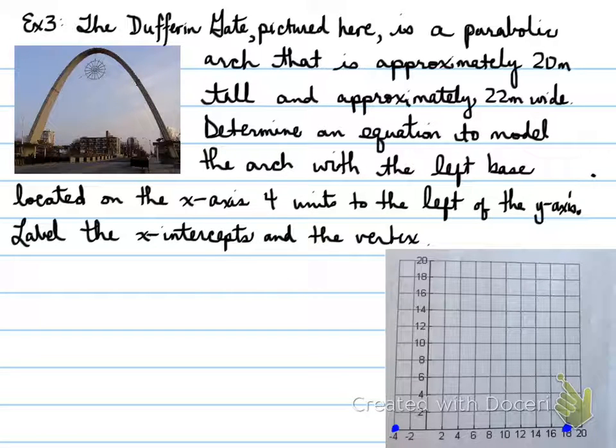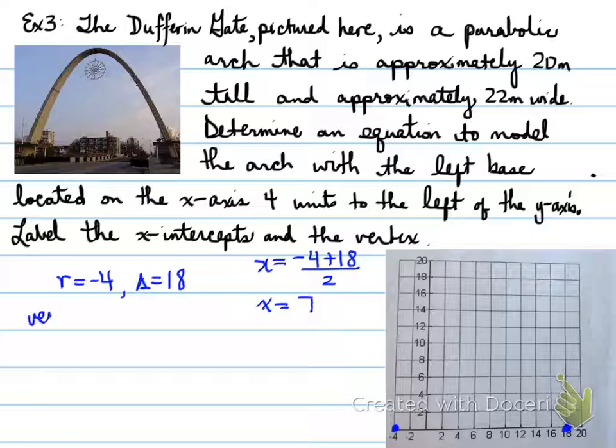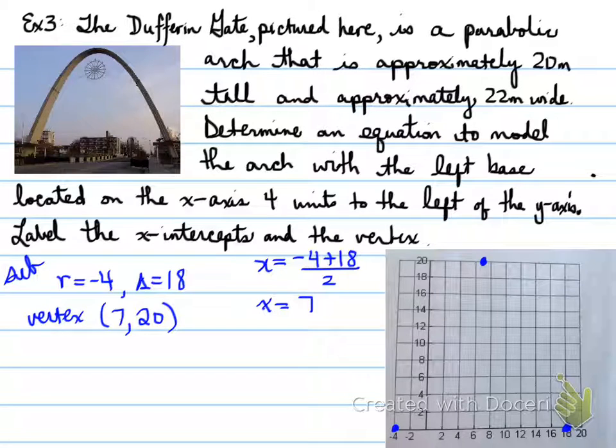Where would it reach the 20 meters high coming up this arch? We have our r, which is negative 4, and our s, which is 18, and we can find out where the axis of symmetry can be located. That will be at negative 4 plus 18, all divided by 2, which gives us x equals 7. This gives us our axis of symmetry. At 7, we can plot all the way up to 20 going up. So our vertex is at 7, 20.